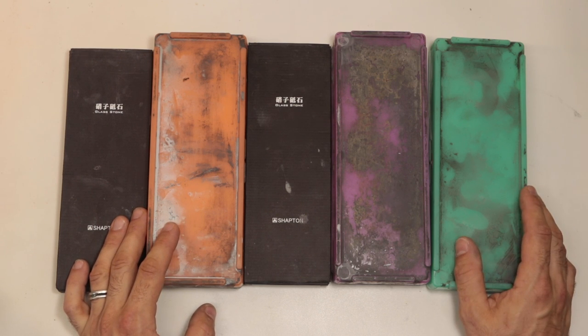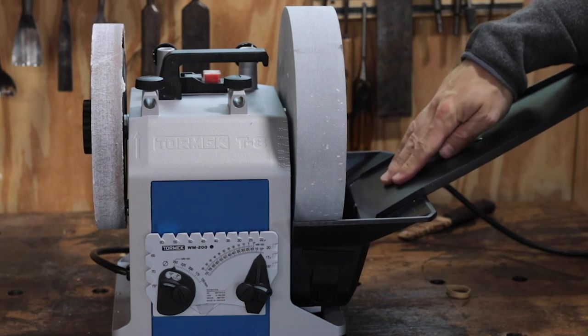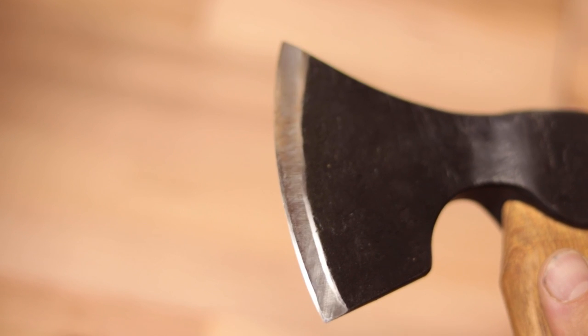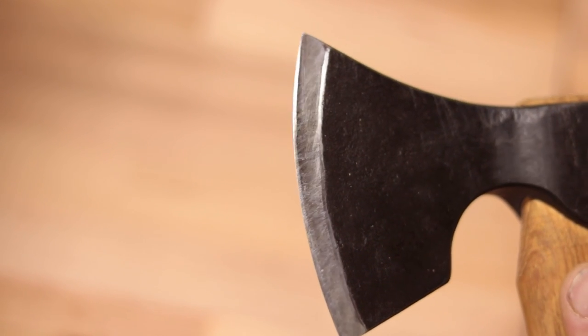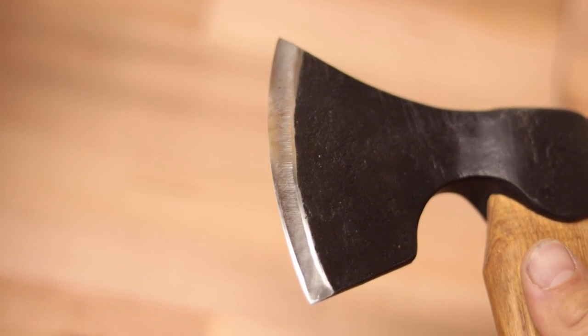A further sharpening upgrade, and easily the most expensive piece of kit in this video, would be getting a Tormek. A sharpening wheel is the only way to put a hollow grind on an edge. The biggest advantage of a hollow grind is that they're quicker to resharpen, and you only remove steel from the edge and the back of the bevel.